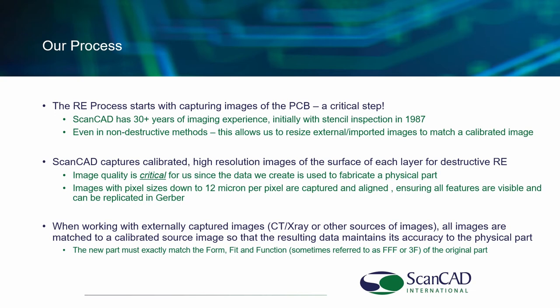For our destructive process, we're able to capture feature sizes down to 12 micron with an accuracy of plus or minus 25 micron across 16 inches. That means that if you scanned a 16-inch ruler on our system, the 0 and 16-inch marks would be within 25 microns of their actual position on the ruler. This also means that positionally, individual features are going to be far more precise. Using this capability, we're able to exactly replicate the form, fit, and function of the original part. Specifically for RF applications, where the shape of the copper determines the functionality or the ability of the board to transmit a signal, this form, fit, and function is extremely important.